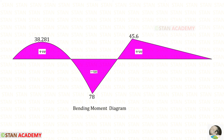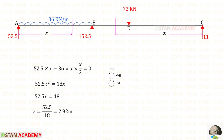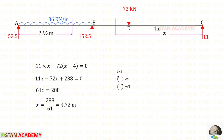This is the complete bending moment diagram. Flipping it upside down gives the bending moment diagram on the tension side. At two points the bending moment becomes zero — these are the points of contraflexure. Making sections at these points, we find the distance in span AB using the right-hand side rule, and the distance in span BC using the left-hand side rule gives 4.72 meters. This concludes the session. Thank you for watching.